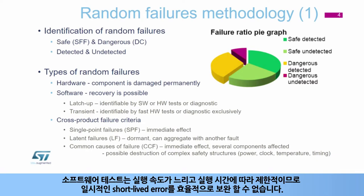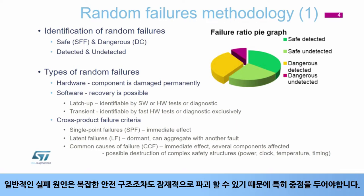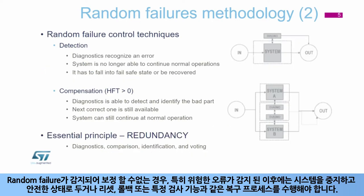Software tests can never compensate for temporary and short-lived errors efficiently, as they are considerably slower and limited by their execution time. From a cross-product point of view, we can recognize single point, latent, or common types of failure causes. Common causes of failure require a special focus, especially as they can potentially destroy even quite complex safety structures. When random failures are detected and cannot be compensated for, especially after a dangerous error is detected, the system has to be stopped and placed into a safe state or go through a recovery process like reset, rollback, or a specific check function.